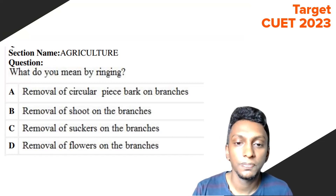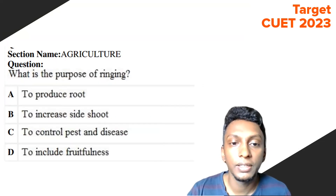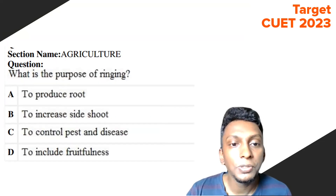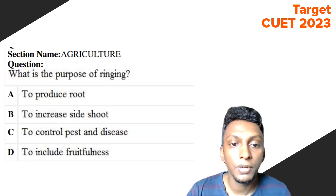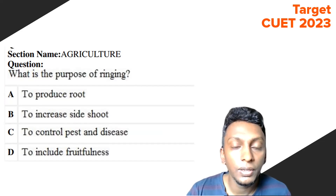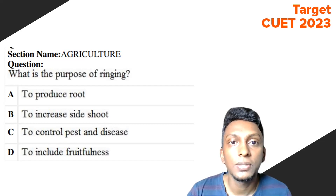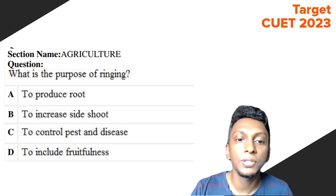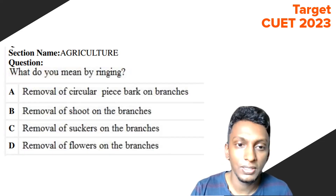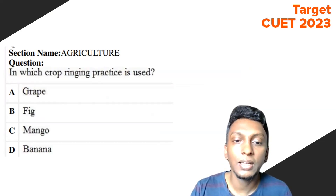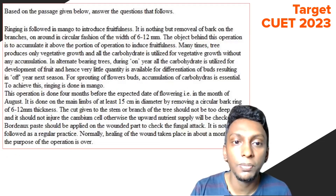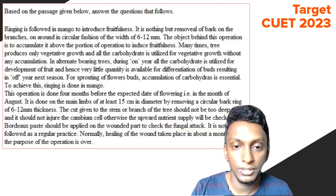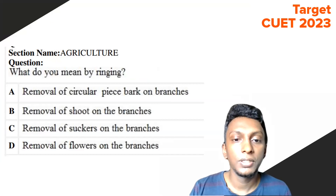Question 8: What is the purpose of ringing? The options are: to produce roots, to produce side shoots, to control pests and diseases, and to introduce fruitfulness. The first sentence of the passage is clear — ringing is followed in mangoes to introduce fruitfulness. So Option D — to introduce fruitfulness — is the right answer.